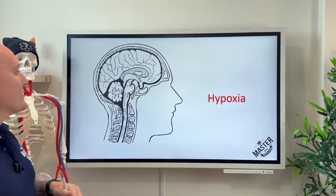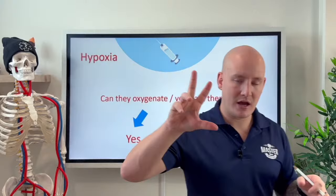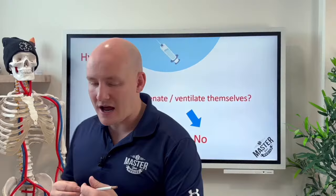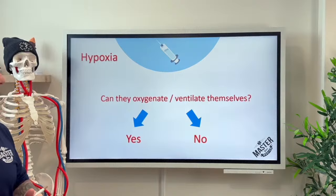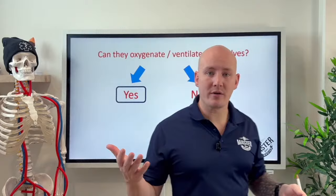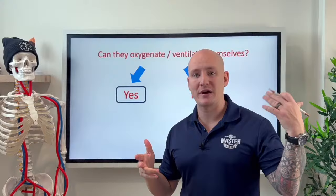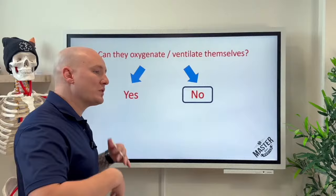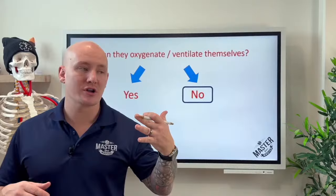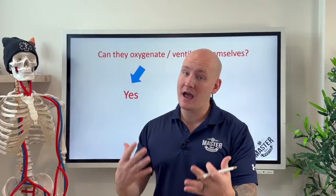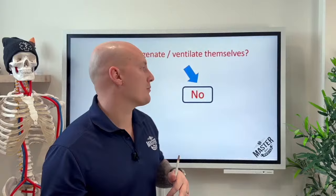Hypoxia can be treated two ways: oxygenation and ventilation. The first question is: can this patient oxygenate or ventilate themselves? If yes, put a non-rebreather on them and get their oxygen as high as possible. If they cannot oxygenate or ventilate themselves, we need to intervene with mechanical ventilation using a BVM with high-flow oxygen. So: identify if they can help themselves — if not, use a BVM; if so, assist with a non-rebreather.